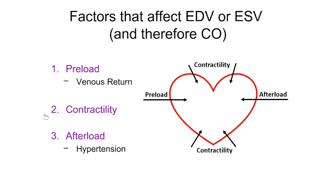Because stroke volume equals EDV minus ESV, anything that affects EDV or ESV is going to affect stroke volume. And because it affects stroke volume, it's going to affect cardiac output. I've got a list of three things that affect EDV or in some cases ESV, and because of that affect stroke volume and therefore cardiac output. I want to define each of these, look at whether they're affecting ESV or EDV, and then discuss the effect on cardiac output.